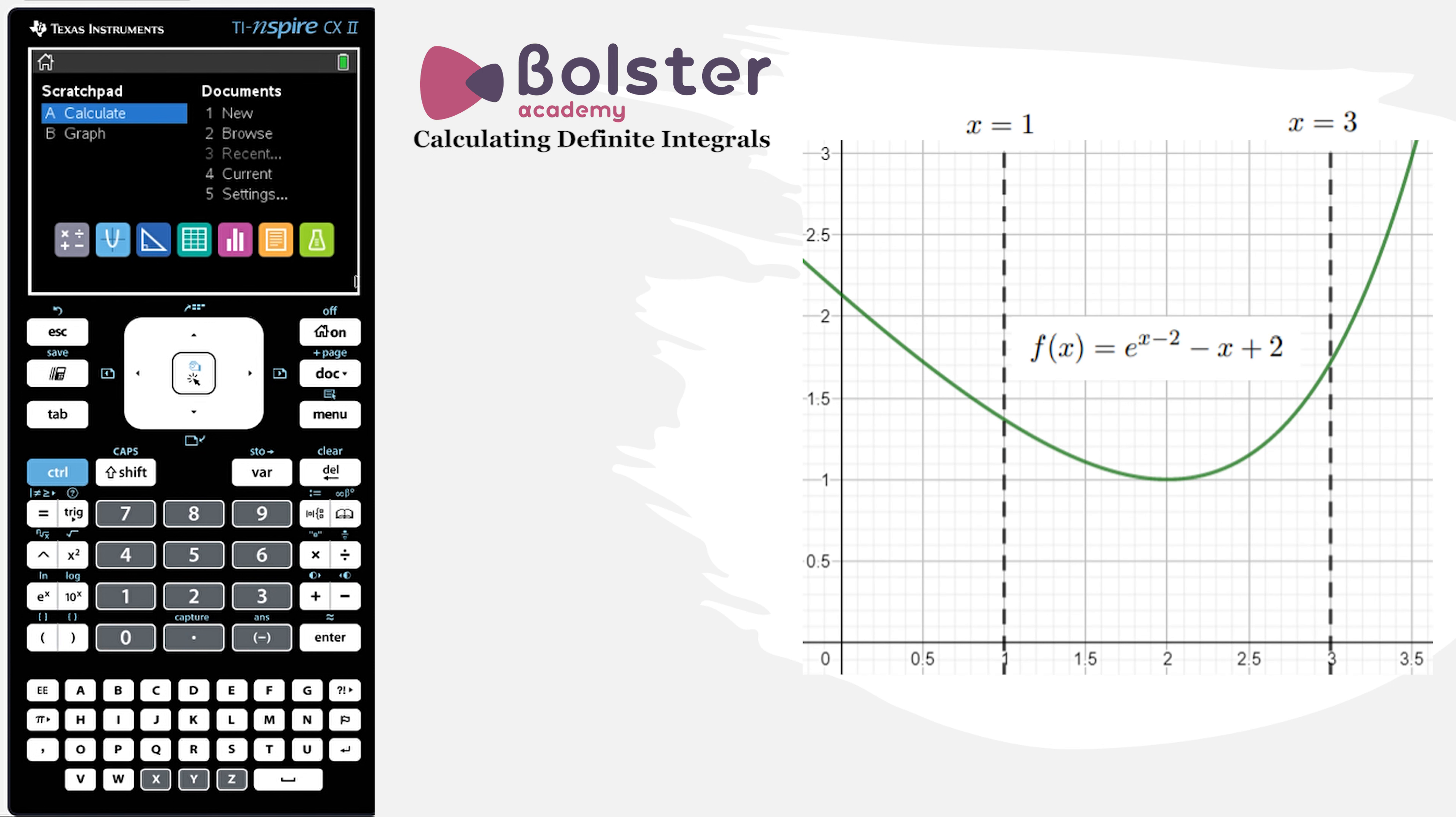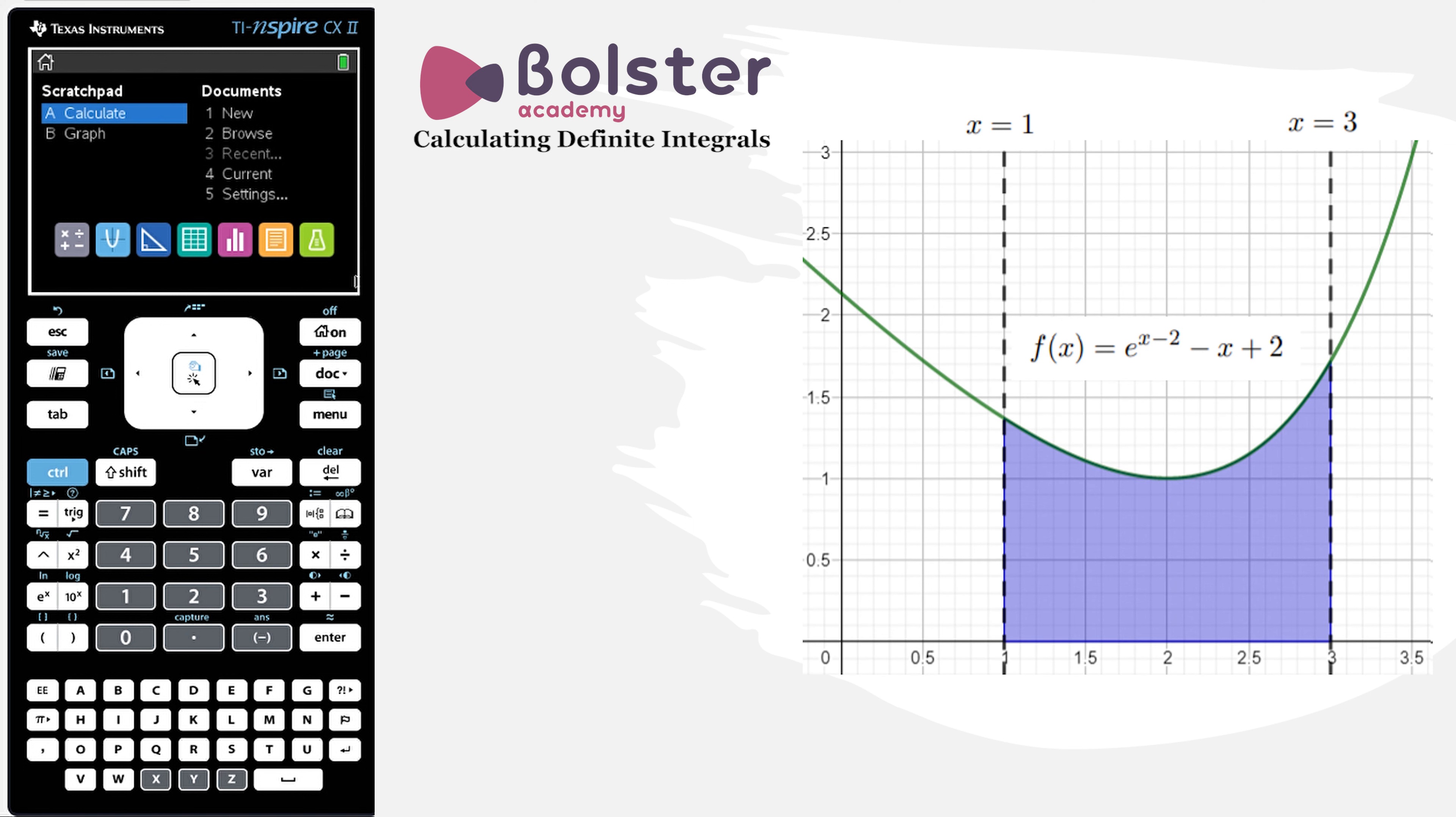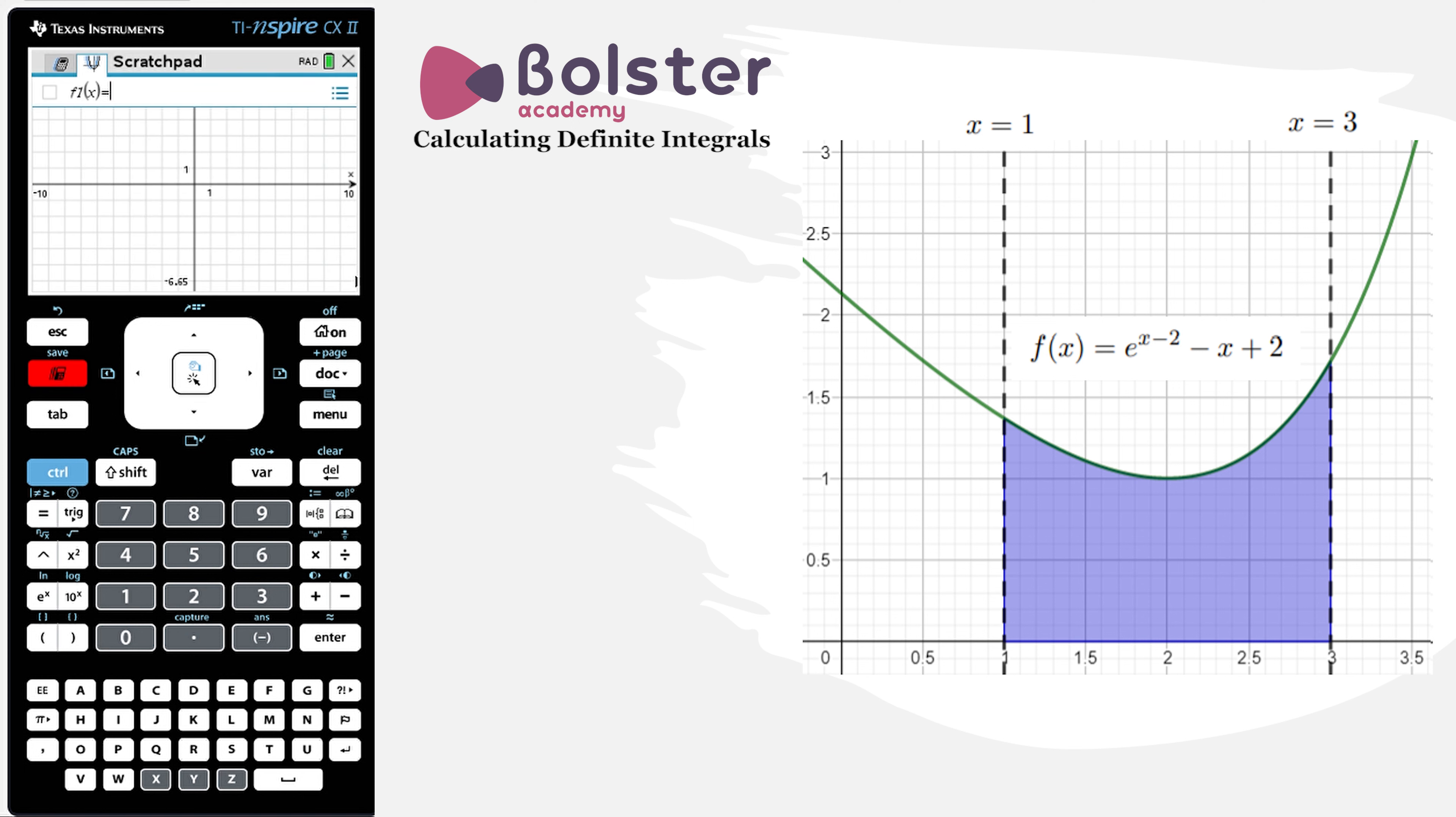Sometimes you'll be given a diagram of the graph and the area that we're interested in is the one between the graph and the x-axis. So let's graph this on our calculator. We hit our scratchpad button twice in order to get into the graphical display and now we just have to input the equation of our function.